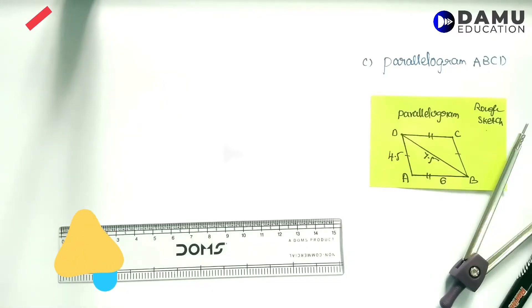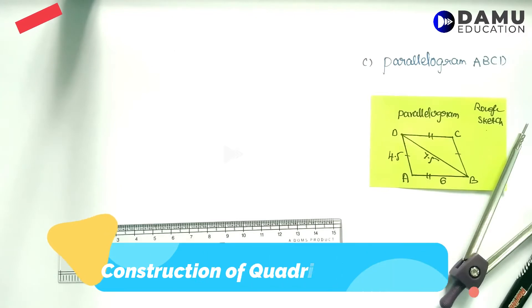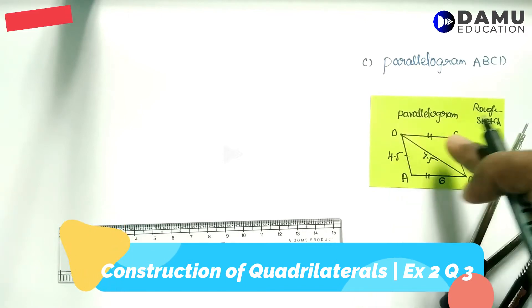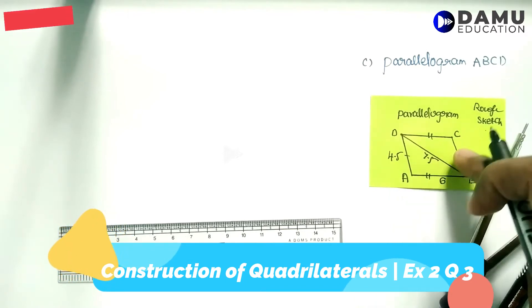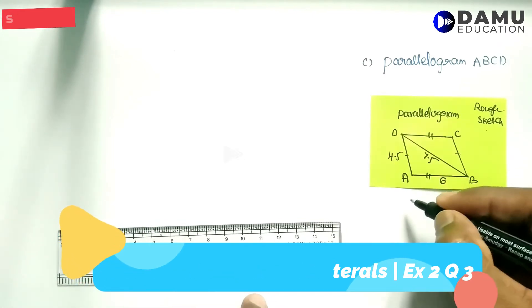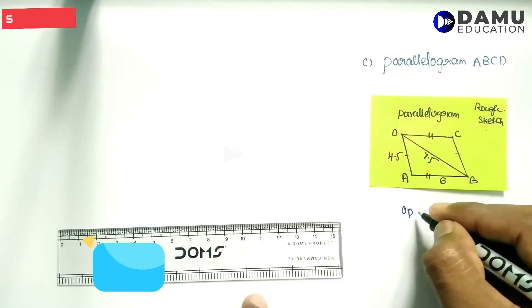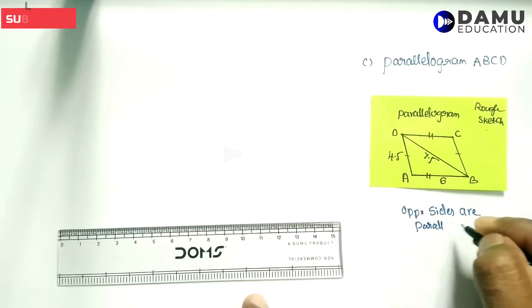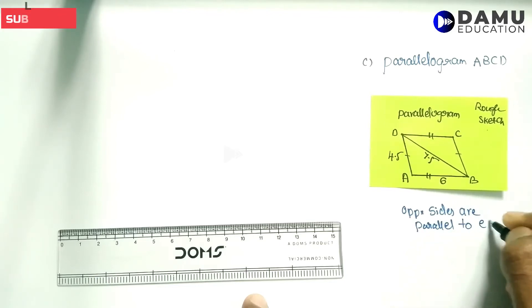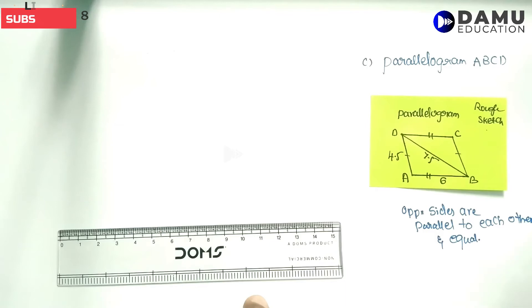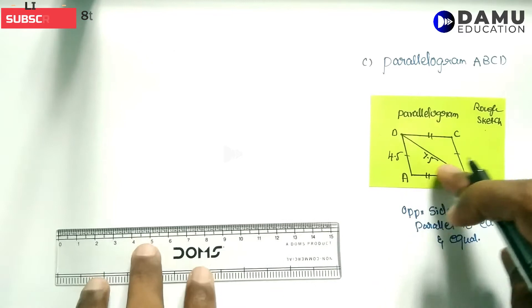Here is our third module: construct parallelogram ABCD with AB equal to 6 centimeters, AD equal to 4.5 centimeters, and BD equal to 7.5 centimeters. For a parallelogram, the conditions are that opposite sides are parallel and equal to each other, and opposite angles are also equal.